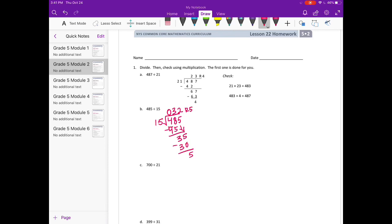And to check we would do 32 times 15. And 32 times 15 is, I'm using my calculator to check, 32 times 15 is 480. And then 480 plus 5, our remainder, is 485. Which is what we started with. So that checks out.